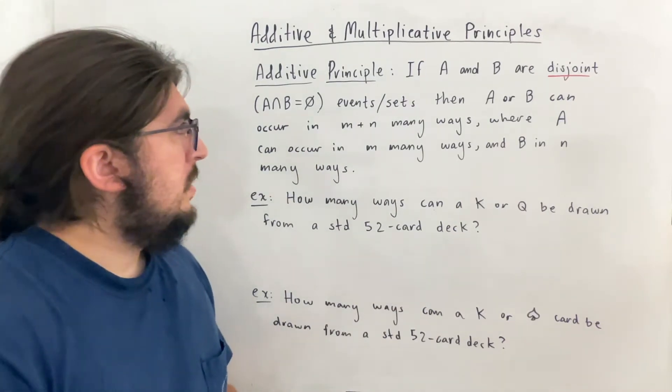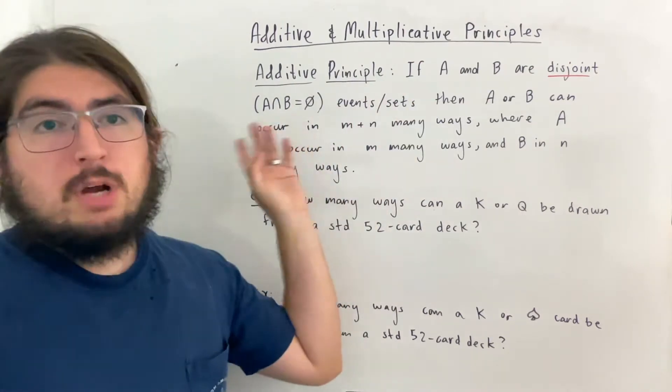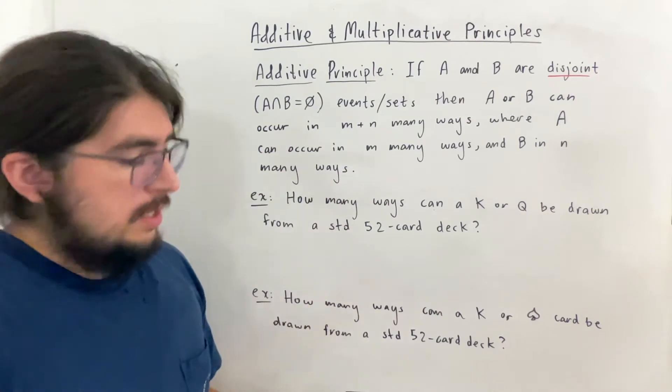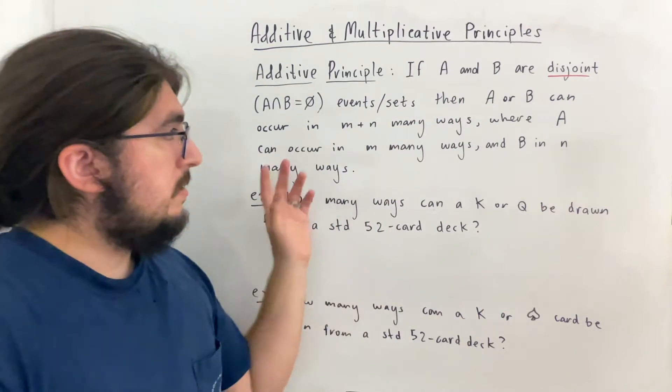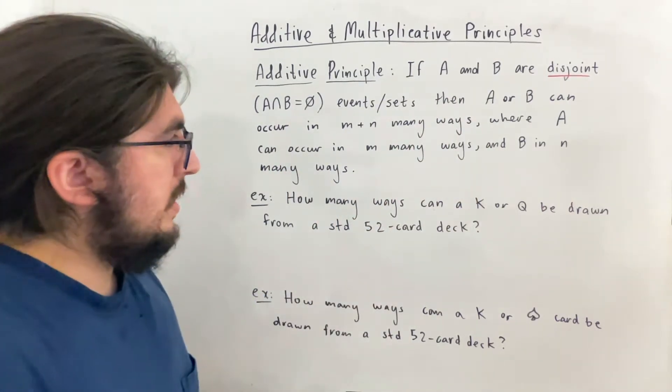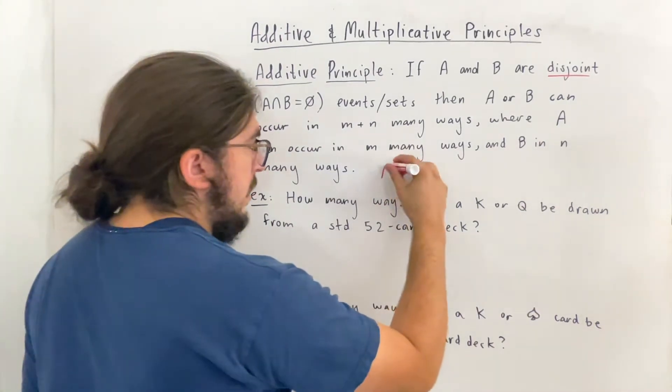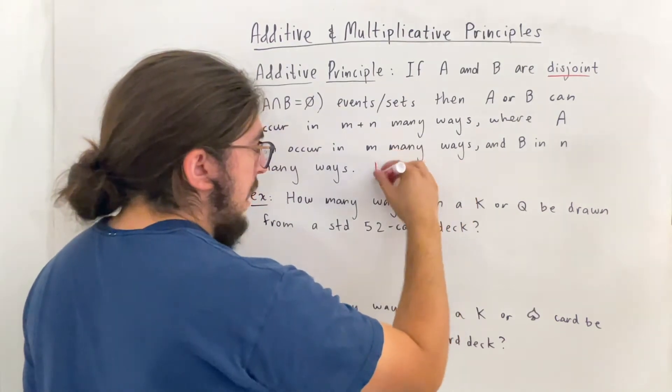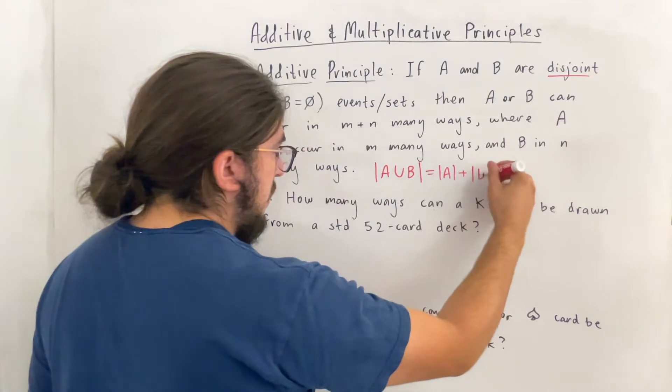So think of it as an event or a set, that's fine. But disjoint means they have no common element. Their intersection is the empty set. So if that's the case, then the amount of ways A or B can occur is the amount of ways A can occur plus the amount of ways B can occur. So I'm going to write this in red here. That this basically means that A union B has a cardinality of the cardinality of A plus the cardinality of B.